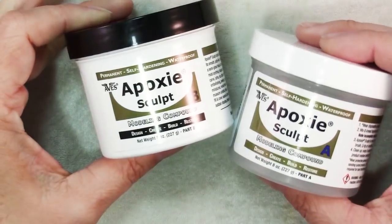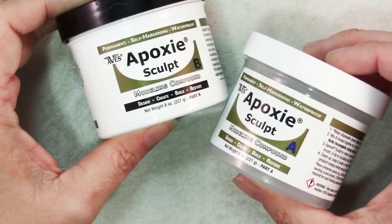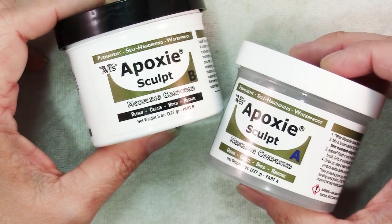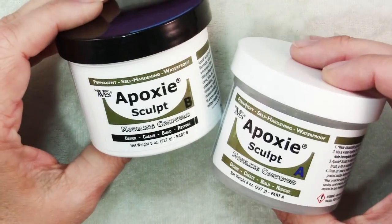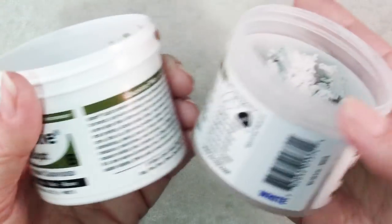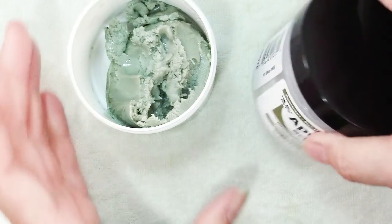So this is epoxy sculpt clay and it's a modeling compound that is air dry. It doesn't go in the oven like polymer clay, but it dries on its own and like many two part epoxy products, it comes in two parts. This happens to be the white color, but it also comes in other colors if you need it.